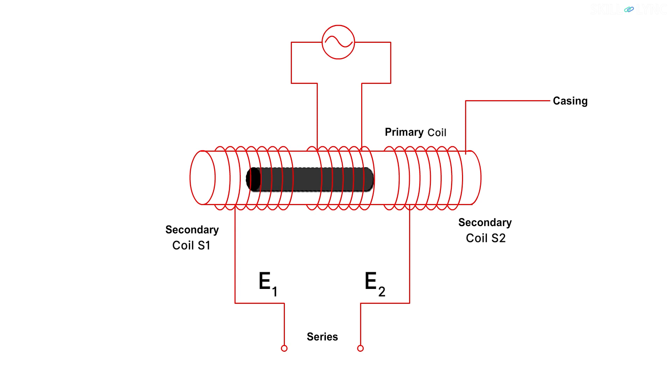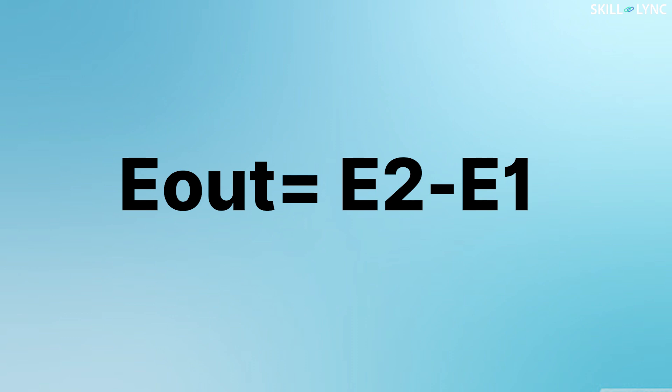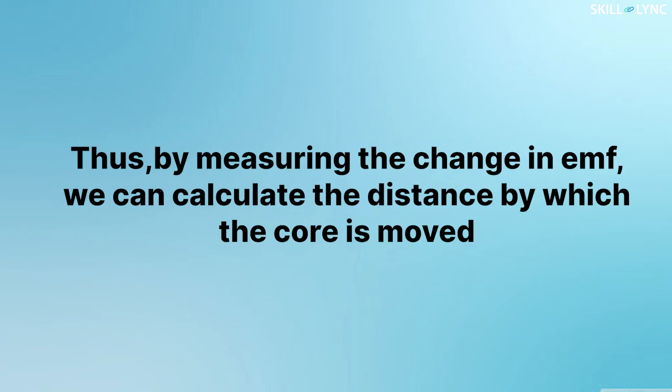Conversely, when the core moves towards the secondary coil S2, the output is given by Eout = E2 - E1. Thus, by measuring the change in EMF, we can calculate the distance by which the core is moved.